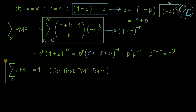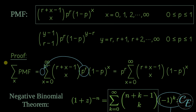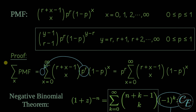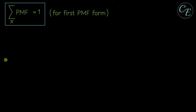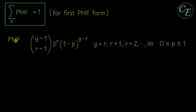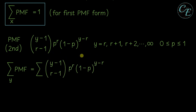Let us now do the proof for the second form. Going back, we have done the proof for this PMF form. Let us now do the proof for this second form. This is the PMF for the second form. So what we will do next is to find again the summation of PMF. We need the support for that second form. Our random variable now is Y rather than X. Let us substitute now this PMF in here. The support for the random variable is now from R to infinity. So we have from Y equals R until Y is infinity. Then same as before, P raised to R has no Y in it, so we can consider it as a constant and move it outside of the summation.